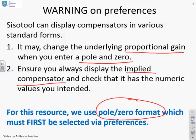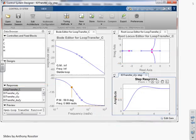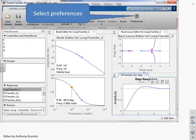For this resource, we're going to use pole-zero format because that works well with lead and lag design. The first thing you need to do is select this option via preferences. If you look at the standard SISOTOOL window, you'll notice over here on the right there's a preferences button. The first thing to do is select preferences.